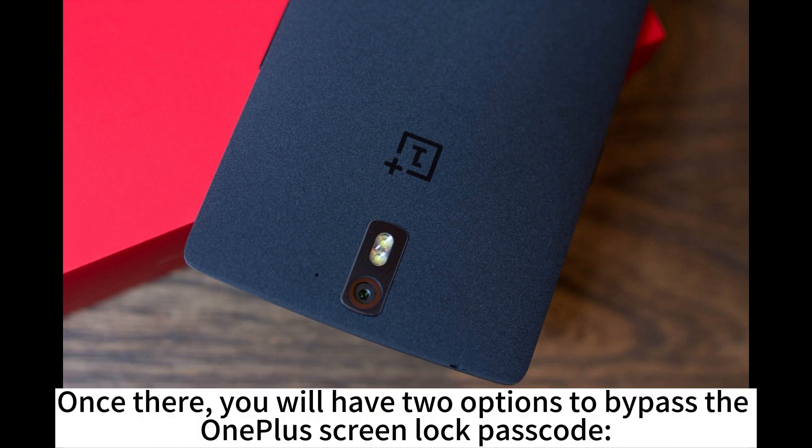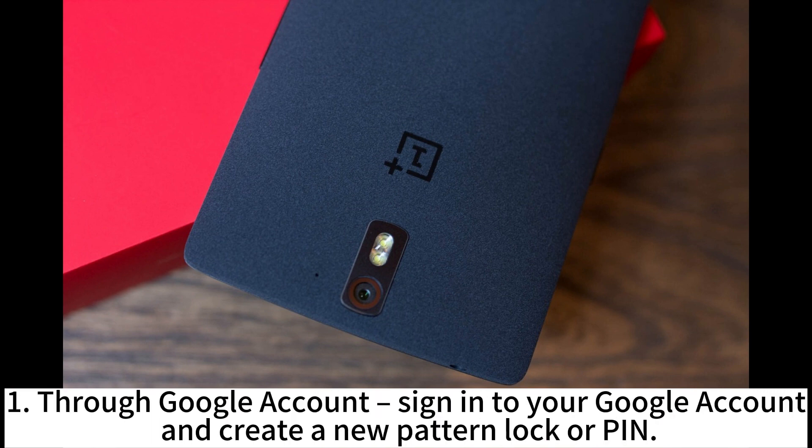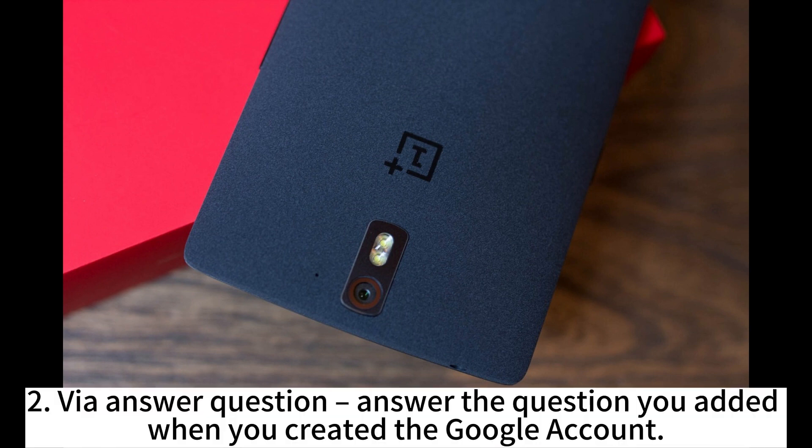Once there, you will have two options to bypass the OnePlus screen lock passcode. First, through Google account: sign in to your Google account and create a new pattern lock or PIN. Second, via answer question: answer the security question you added when you created the Google account.